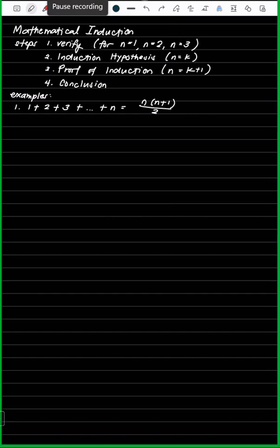As you can see in the example, there are variables n. Please note that these are just variables, so you can use any letter you want. In books, you will see the letter n substituted to k. All the n's you see would be substituted to 1, 2, or 3 for verification; induction hypothesis uses k, and proof of induction uses k plus 1.